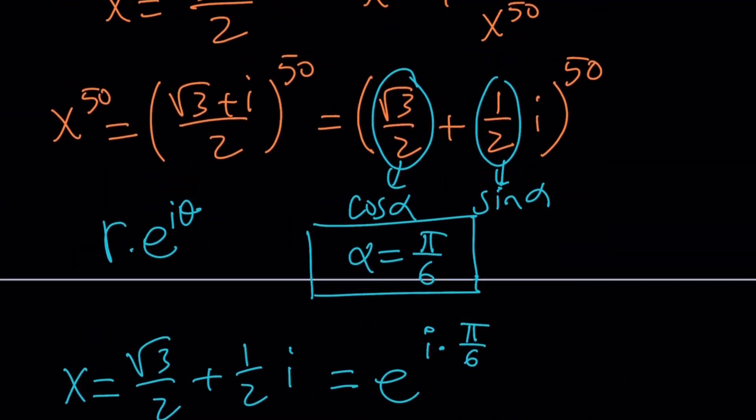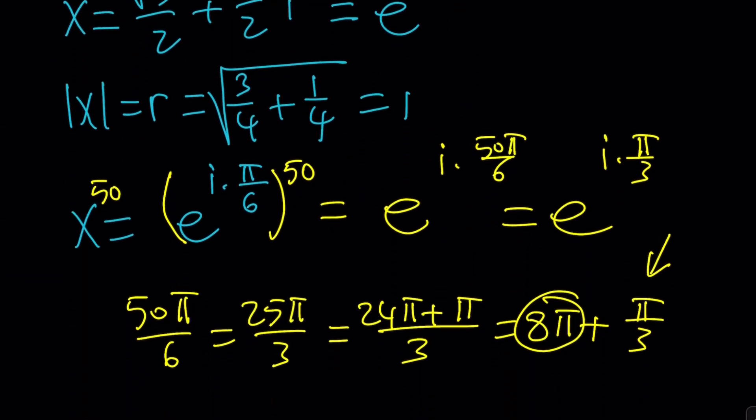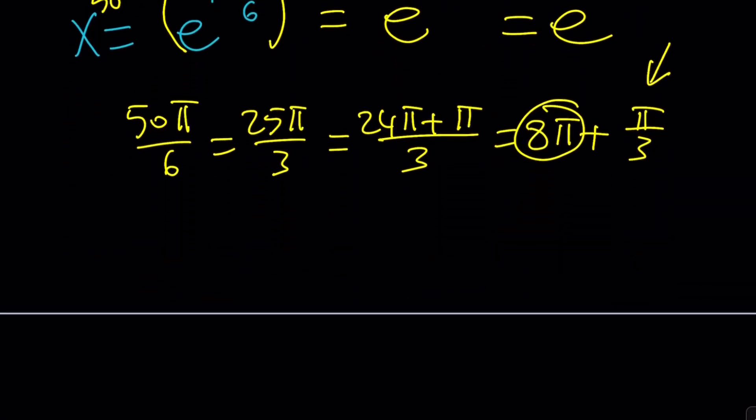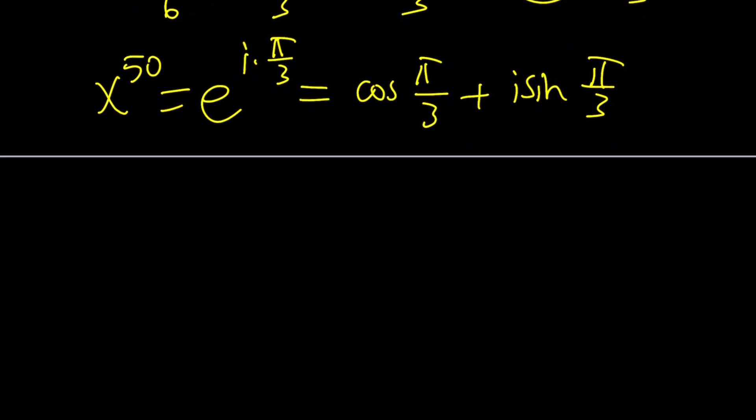I just raised it to the 50th power. It was just similar to squaring it because it was pi over 6. Now it became pi over 3. So now this is my number. X to the 50th is e to the power i pi over 3. But I can also write it as cosine of pi over 3 plus i sine pi over 3. Now what is cosine 60 degrees? That's 1 half. And this is root 3 over 2 multiplied by i. That's my x to the 50th power.